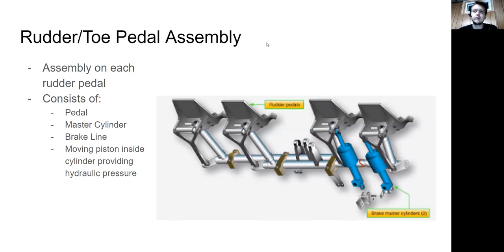There's a lever-operated brake system, which is more basic, but a lot of aircraft use the rudder/toe pedal assembly. It's an assembly attached to each rudder pedal. It consists of the pedal itself, a master cylinder attached to the pedal, and then a brake line that comes out of the master cylinder.